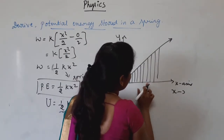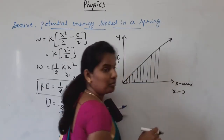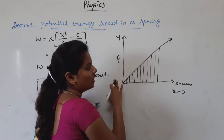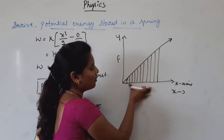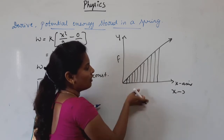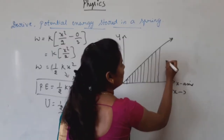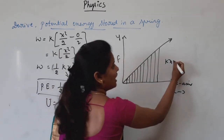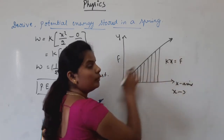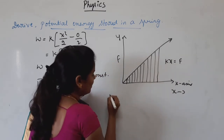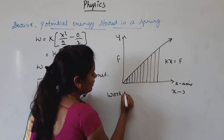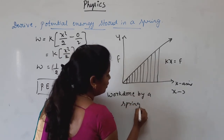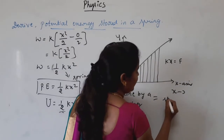When we stretch the spring, it develops work done. When we apply a force, the spring gets stretched and work is done. The product of force and displacement gives the work done. The shaded region in the graph represents the work done by the spring, where F equals KX.